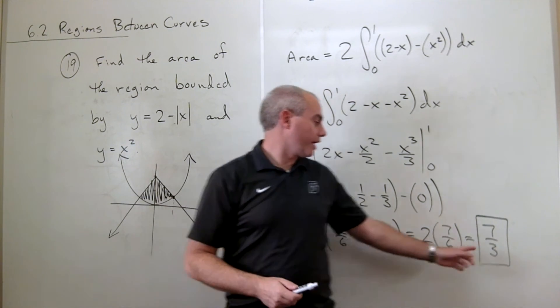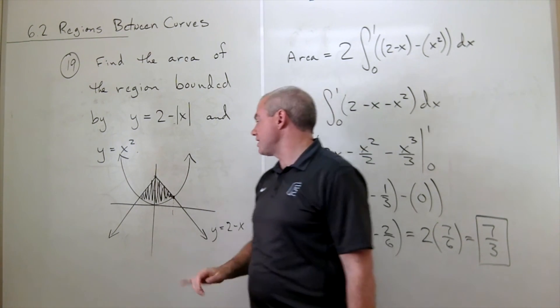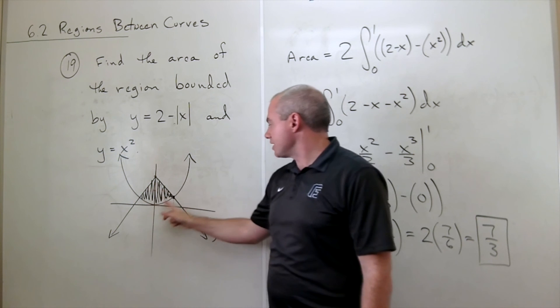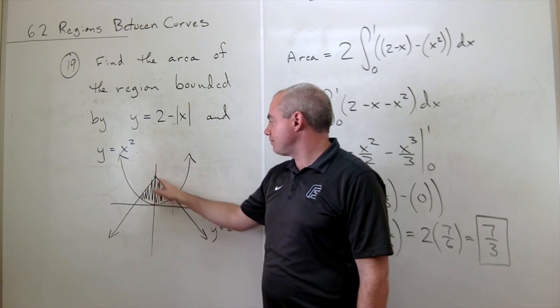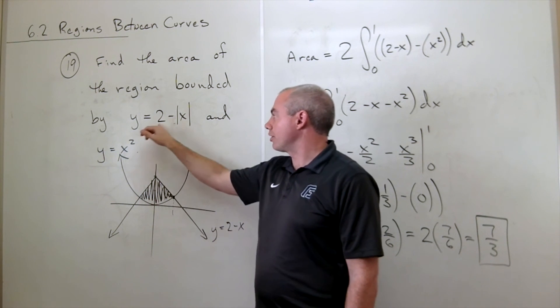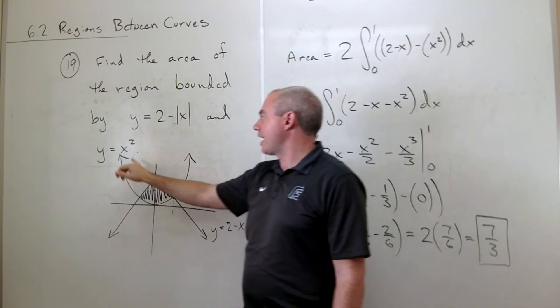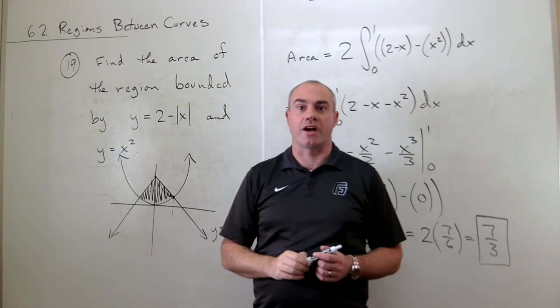So our answer is 7 thirds. 7 thirds is the area trapped between these two curves, y equals 2 minus absolute x and x squared. So I'll see you guys later.